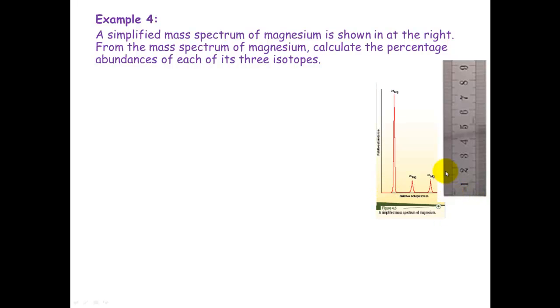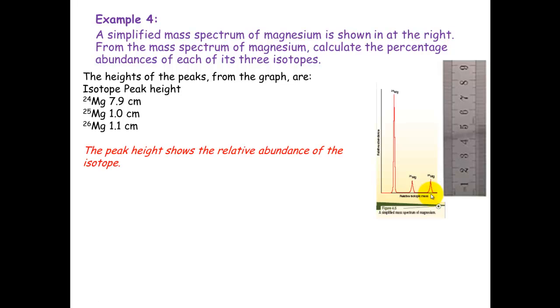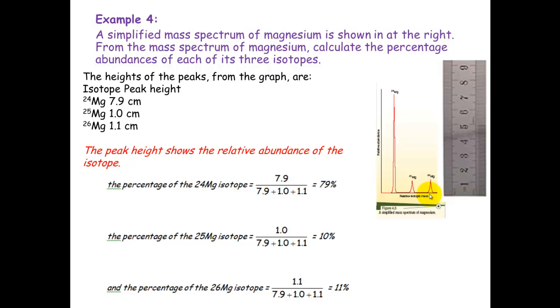So you've got a ruler here. You can measure up that the top peak here comes to 7.5 centimeters, and that these two peaks are 1 centimeter each. So if you measure exactly, you get 7.9 centimeters for magnesium-24, 1 centimeter for magnesium-25, and 1.1 centimeters for magnesium-26. Now that we know that, we can turn those into percentages of the total height. So the percentage of the isotope of magnesium-24 is 7.9 over the total of all of those heights, which will equal 79%. And you work out the other isotopes exactly the same way. You're just working that as a percentage of the overall length of those peaks.